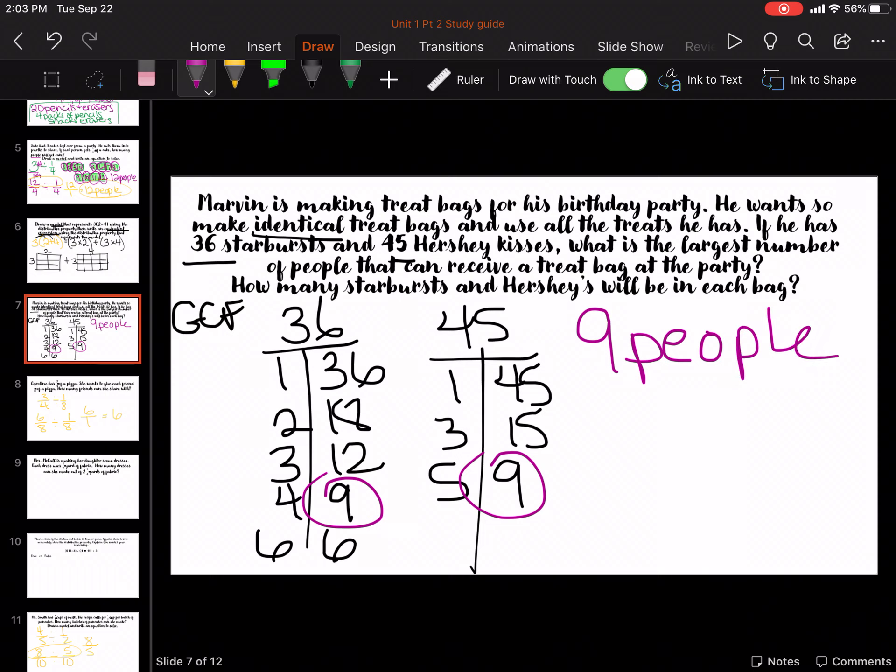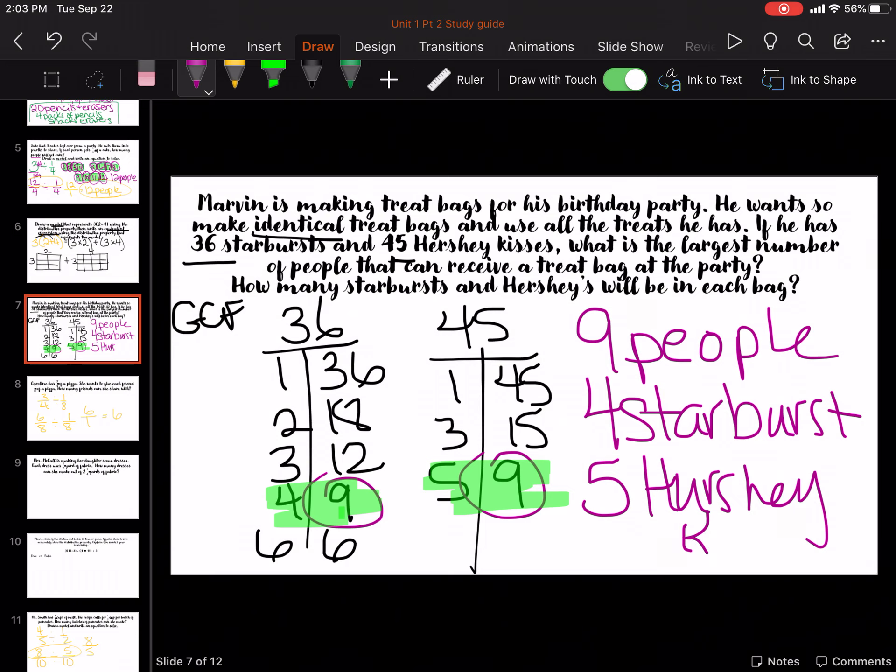Okay, so how many starbursts? Well, what you do is you look at the number across from it. So it's going to be 4 starbursts, and 5 Hershey's Kisses. Okay, 9 bags, or 9 people can get bags. 4 starbursts, 5 Hershey's Kisses.